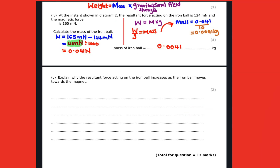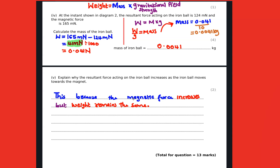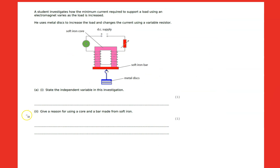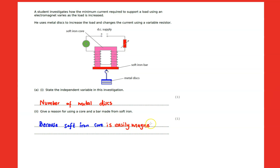The main reason that happens is the magnetic force increases whereas the weight remains constant. Since the resultant force is going to increase, resultant force equals magnetic force minus weight. The independent variable is actually the number of metal disks we have here, because a soft iron core is easily magnetized.